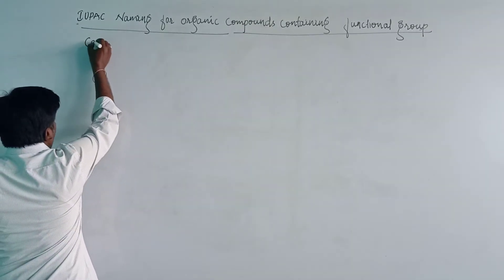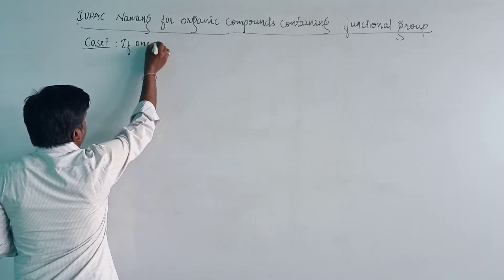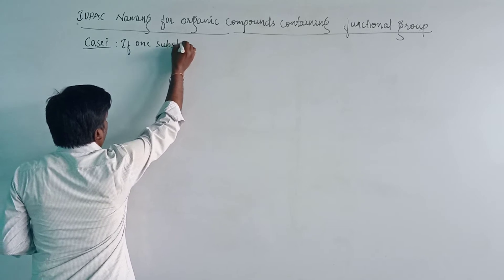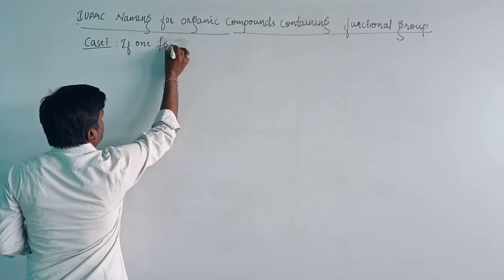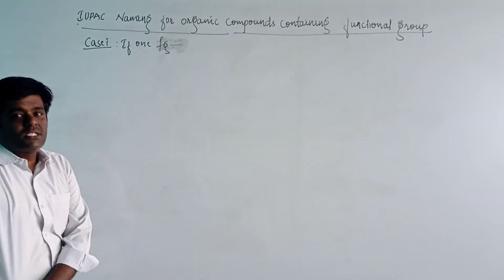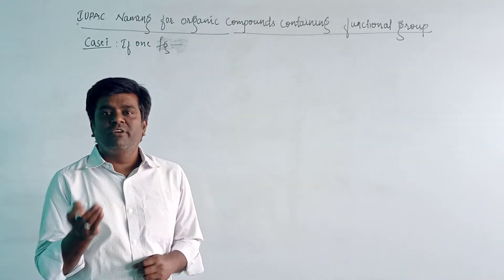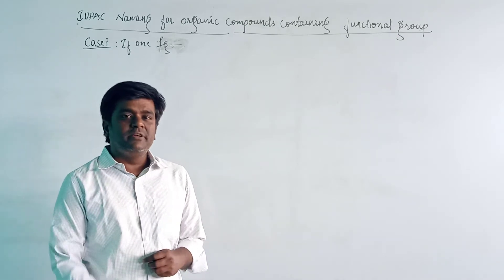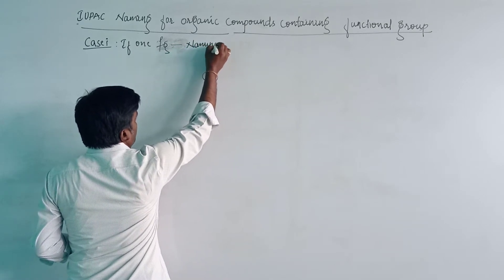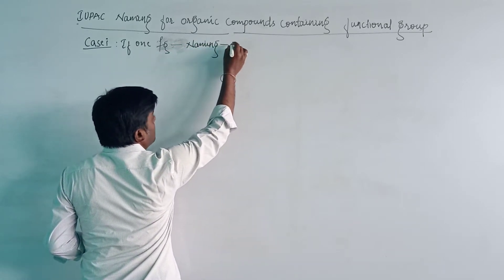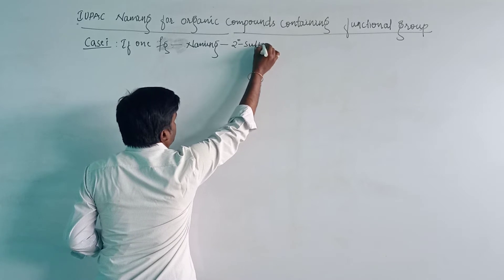Consider example S1 here. If one functional group is present, then we will start the numbering in such a way that the functional group should get the lowest number, and the naming should be done by using the secondary suffix.